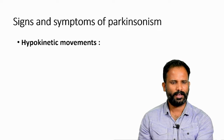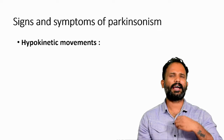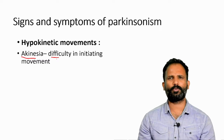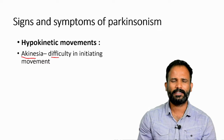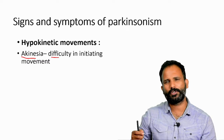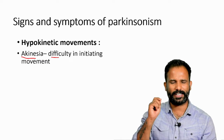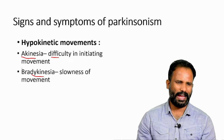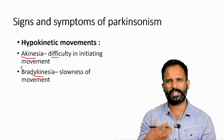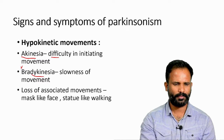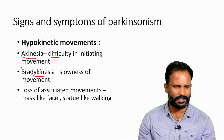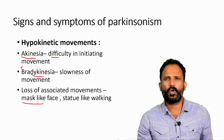Parkinsonism presents with hypokinetic and hyperkinetic features. Hypokinetic features include akinesia — difficulty initiating movement, where the subject is very slow to start a movement — and bradykinesia, where even initiated movement is very slow, which is the most troublesome clinical feature. Since basal ganglia controls associated movements, there is loss of facial expressions, called mask-like face, and no arm swings, giving a statue-like walking appearance.